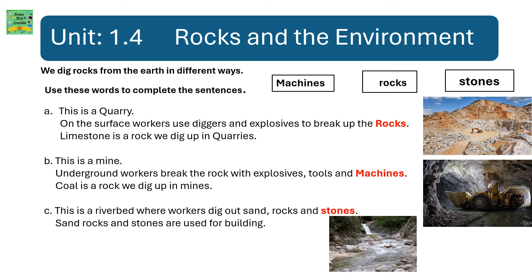Unit 1.4 Rocks and the Environment. We dig rocks from the earth in different ways. Use these words to complete the sentences: machines, rocks, stones. This is a quarry — on the surface, workers use diggers and explosives to break up the rocks. Limestone is a rock we dig up in quarries. This is a mine — underground, workers break the rock with explosives, tools, and machines. Coal is a rock we dig up in mines. This is a river bed where workers dig out sand. Sand, rocks, and stones are used for building.